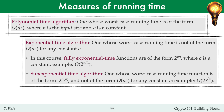The sub-exponential time algorithm is an algorithm whose worst-case running time function is of the form 2 to the power little o of n, where n is the input size, and not bounded by any polynomial in the input size. For example, the function 2 to the power square root of n is sub-exponential in n. Note that the square root of n is little o of n, and 2 to the power square root of n cannot be upper bounded by any polynomial in n.